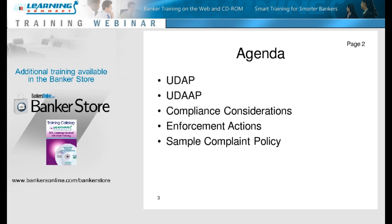Not included in your materials is information on the Bank of America UDAP citation announced last week — actually from the 7th. Before getting into definitions, I want to look at that first. As we start to talk about UDAP today, we'll explain what it is with one A and two A's, look at compliance considerations, discuss enforcement actions, and cover a sample complaint policy, because complaint policies tie into this highly. But first, I'm going to slice and dice a little bit on this consent order with Bank of America.